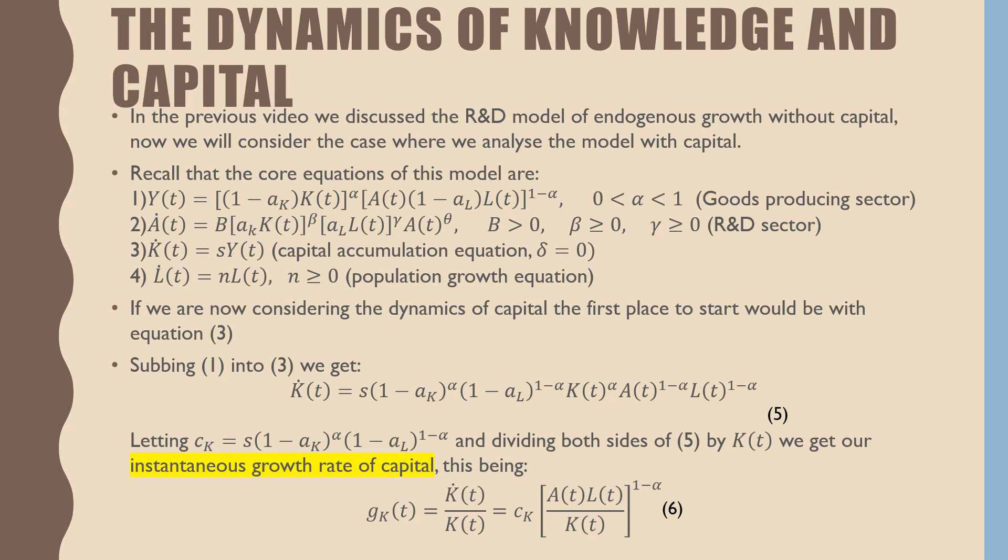If we are now considering the dynamics of capital, the first place to start would be with equation three. Subbing Yt into equation three, we get the following. Letting K dot equal to our savings rate times one minus our proportion of capital which is dedicated to R&D, raised to the power of one minus alpha, and dividing both sides of equation number five by Kt, we get our instantaneous growth rate of capital, which is Gk, equal to K dot over K, which is equal to Ck times ATLT over Kt raised to the power of one minus alpha.